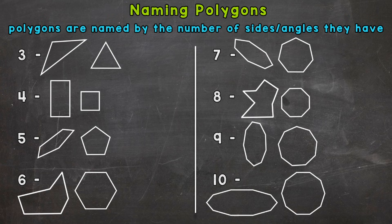I want to start with the word polygon itself. It comes from the Greek word poly, which means many, and gon, which means angles. Polygons are named by the number of sides and angles they have.